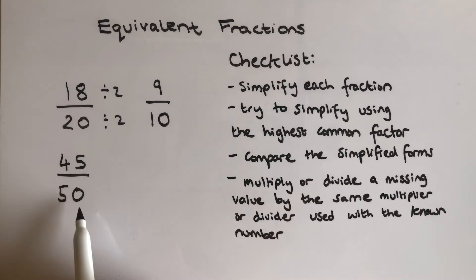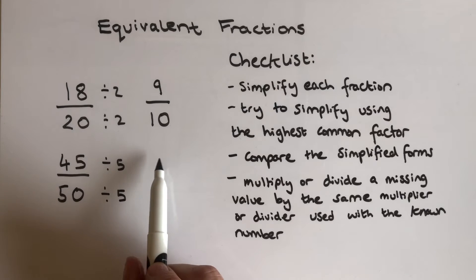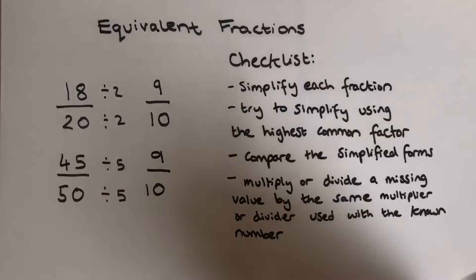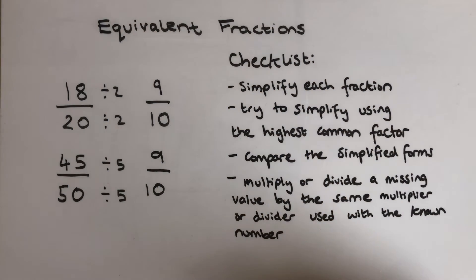The highest common factor for 45 and 50 is 5. So I'm going to divide the numerator and denominator top and bottom by 5, which gives me the simplest form. And I compare 9 over 10, 9 over 10, 9 tenths, those are the same. So this is a pair of equivalent fractions.